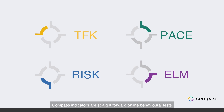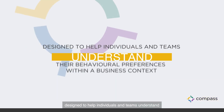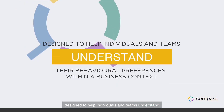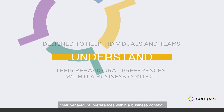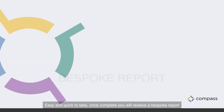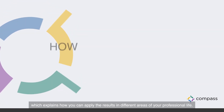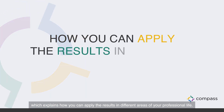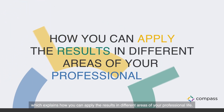Compass Indicators are straightforward online behavioural tests designed to help individuals and teams understand their behavioural preferences within a business context. Easy and quick to take, once complete you'll receive a bespoke report which explains how you can apply the results in different areas of your professional life.